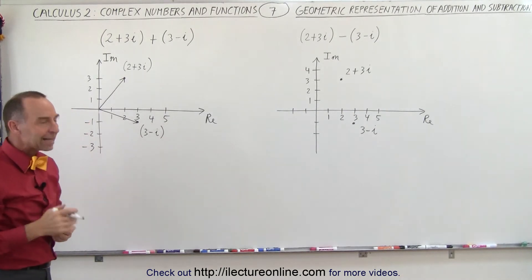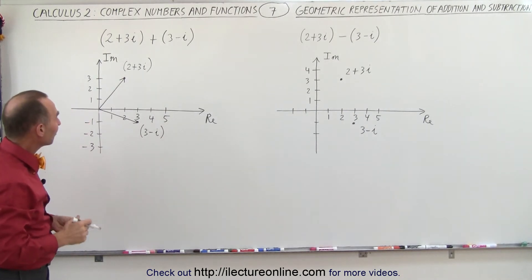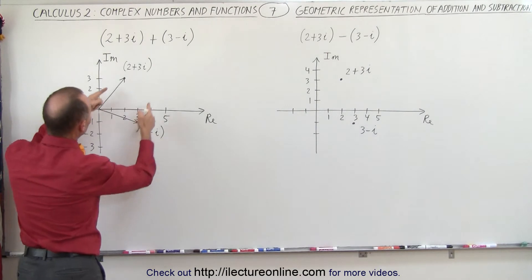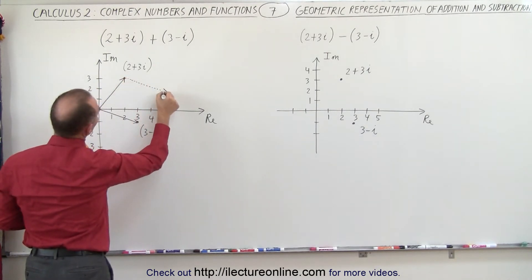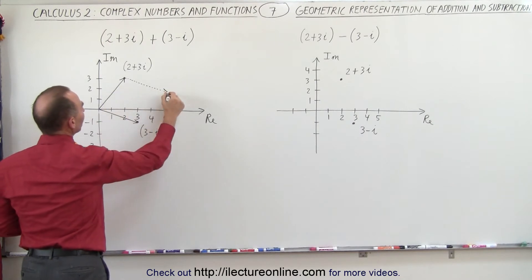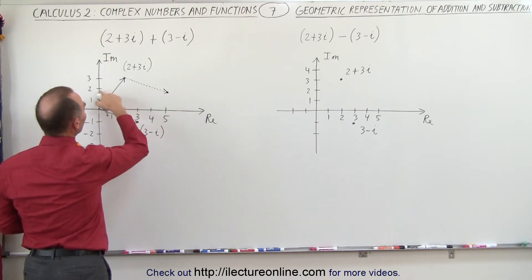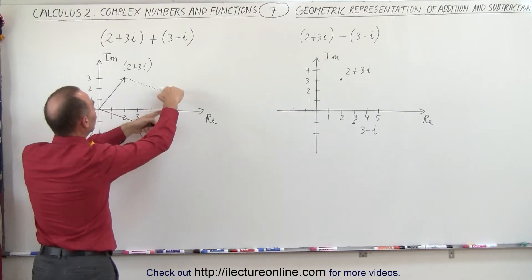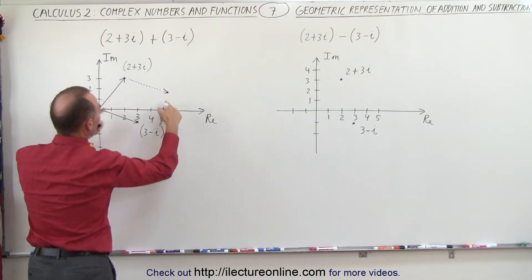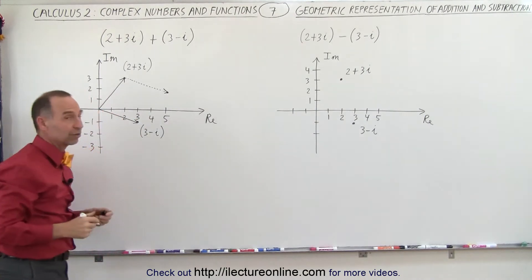So when we add these together, it's almost like adding vectors together. We can take this vector and slide it over there, like this, and notice that if we add these together, the sum should equal this right here, which is basically 5 units in the x direction and 2 units in the imaginary, or the real direction and 2 units in the imaginary direction.